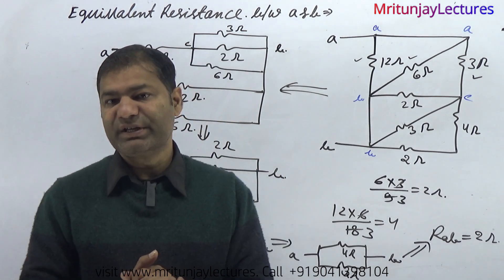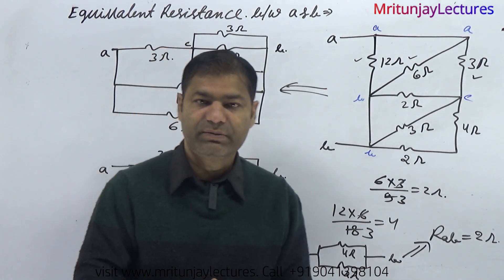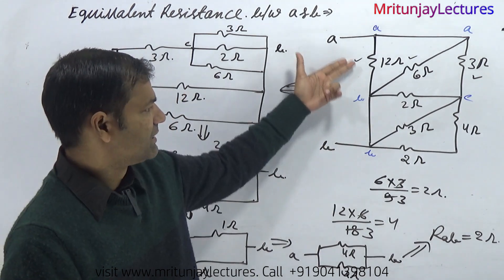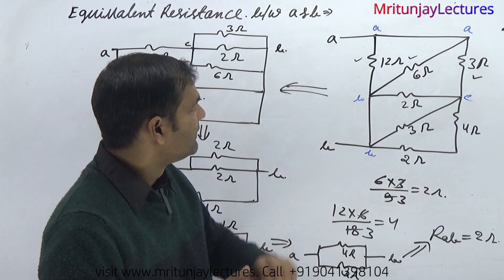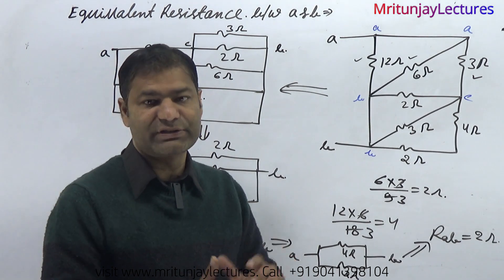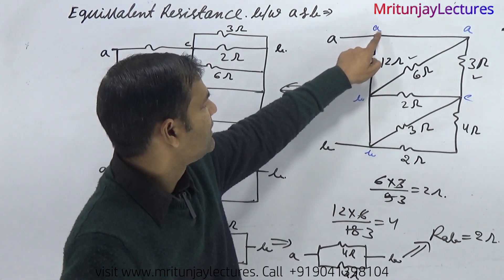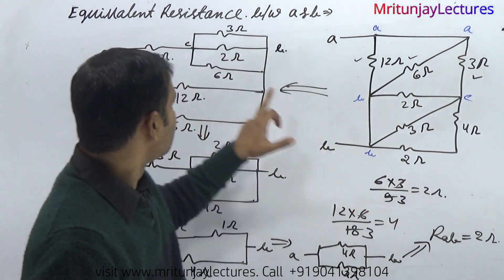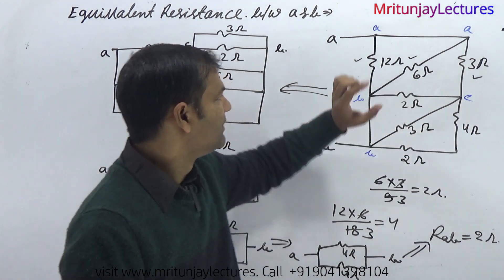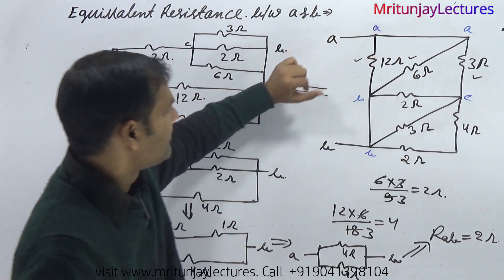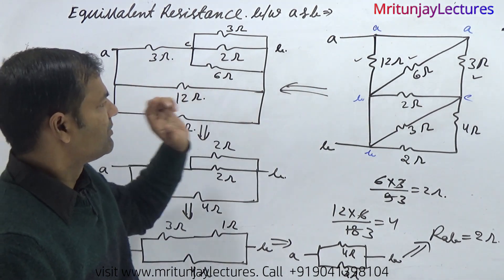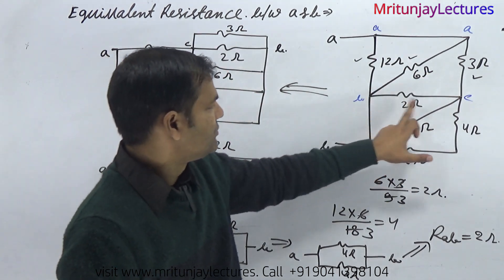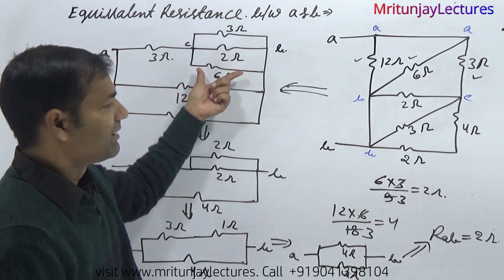Now determine equivalent resistance between A and B for the next circuit. So how can we determine? First, see the circuit — this circuit will have R given. You can redraw the circuit. That point and that point have the same potential — that is A. That point and that point have the same potential — that is B, and that point is C. These two are in parallel. So 6 and 12 are like this: A–C is 3 ohm, and 2, 3, and 6 are in parallel.